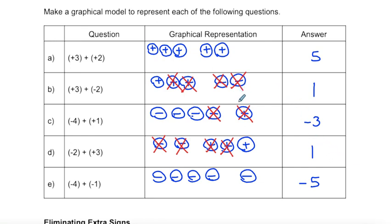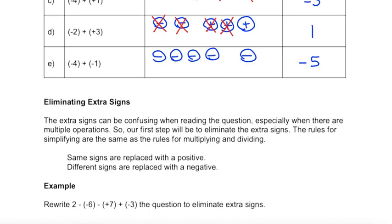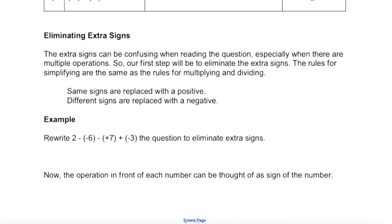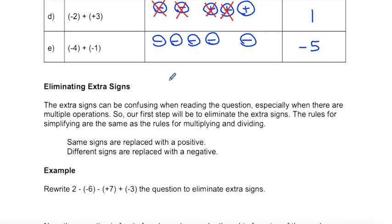Using integer graphical representations is a good method, especially when first starting out, to truly see what is happening when we add or subtract positive and negative integers. But it's not always practical moving forward because it takes time. So we're also going to look at how we can eliminate extra signs. The extra signs — like negative two plus plus three, or negative four plus negative one — can be really confusing, especially with multiple operations. Our first step is to eliminate those extra signs.